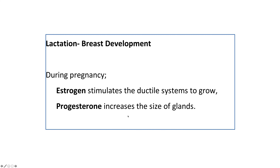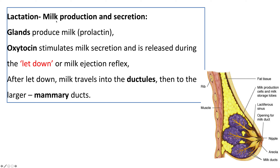During pregnancy, estrogen stimulates the ductal system of the breast to grow, and progesterone increases the size of the glands. Lactation is the production and secretion of milk by the mammary glands. Prolactin stimulates the production and development of the glands to produce milk, but milk will not be released until childbirth.